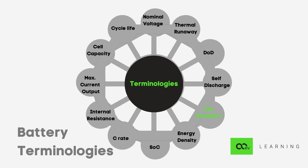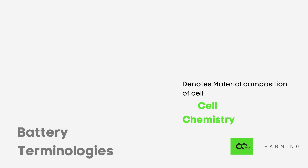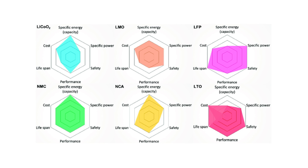Coming to cell chemistry — it denotes the material composition of the anode and cathode, serving as a nomenclature for which materials are used in electrode manufacturing. Examples include LCO (lithium cobalt oxide), LMO (lithium manganese oxide), LFP (lithium iron phosphate), NMC, NCA, and LTO (lithium titanate oxide). These abbreviations are a shorthand way to represent the electrode materials used.